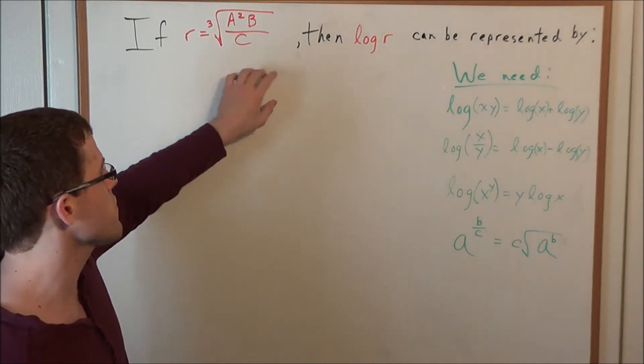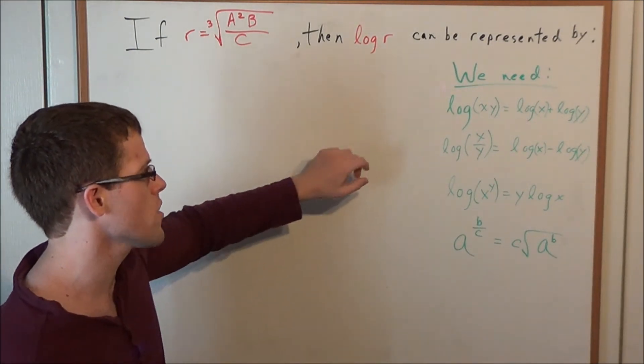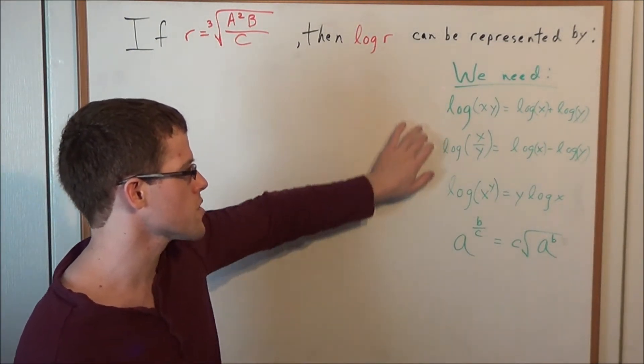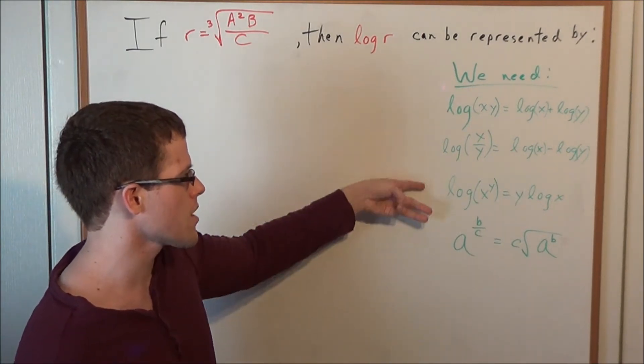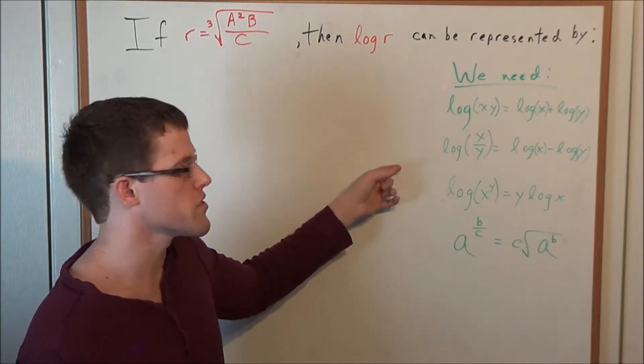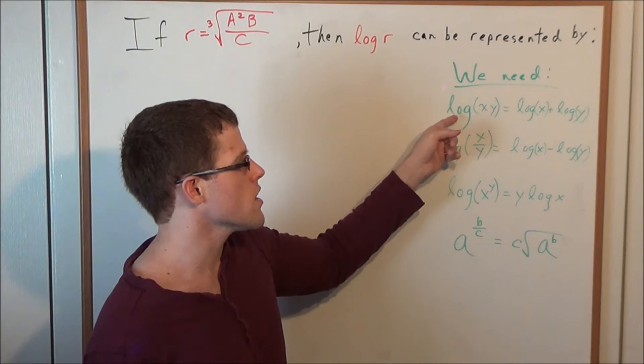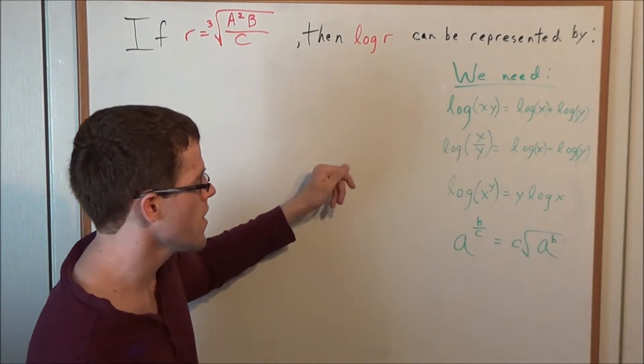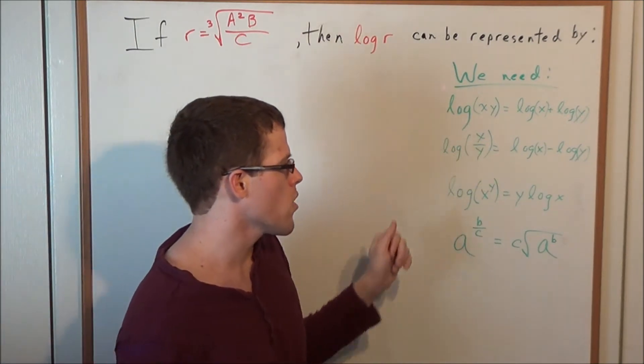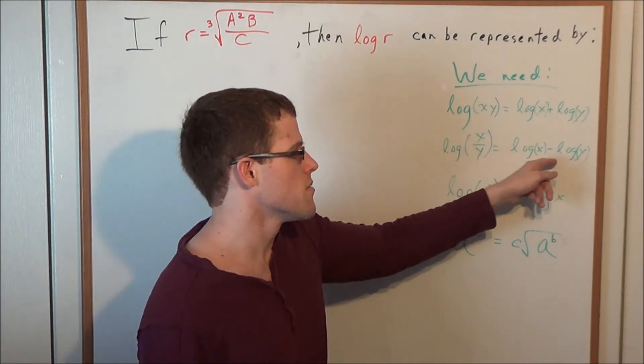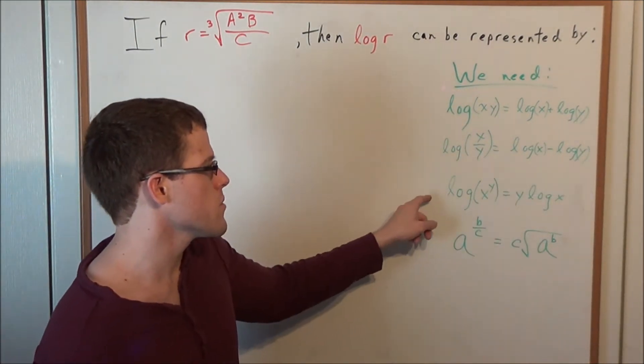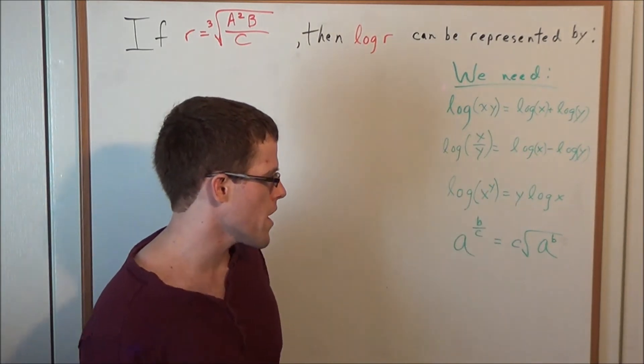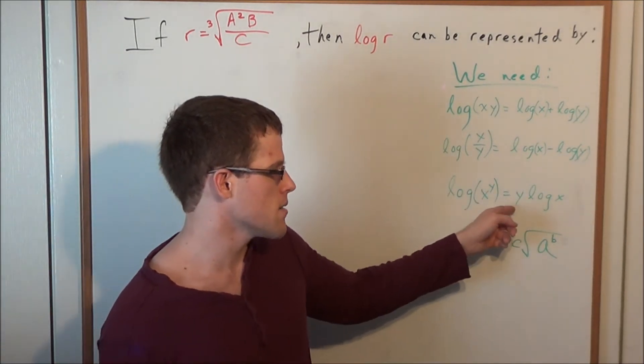Now before we simplify and look for log r, let's go ahead and focus on what we're going to need to solve this problem. We're going to need three log properties, which I prove in an alternate video. We have that the log of x times y is equal to log x plus log y. We have log of x divided by y is equal to log x minus log y. And finally, we have log of x raised to the y power; this would equal y times log x.